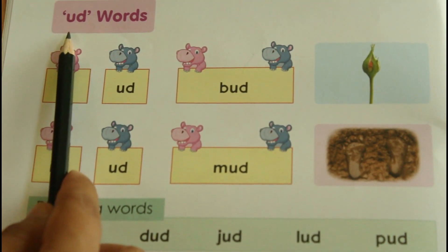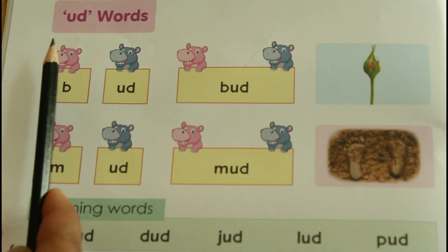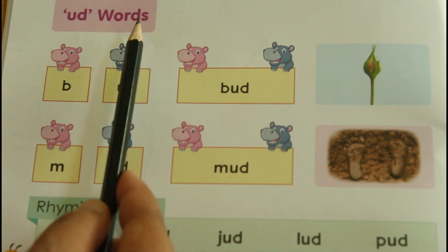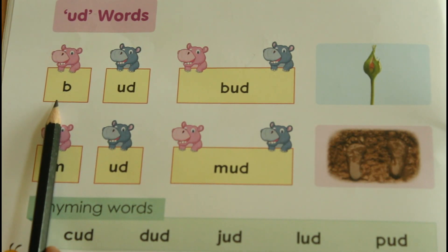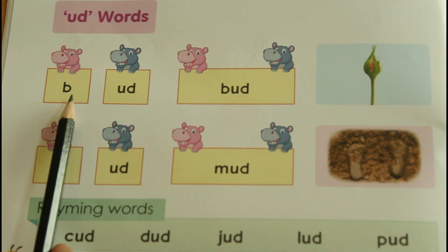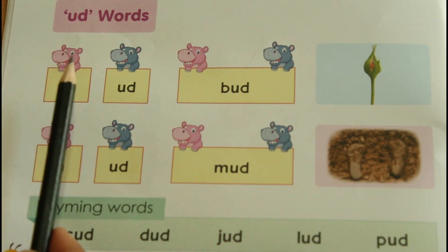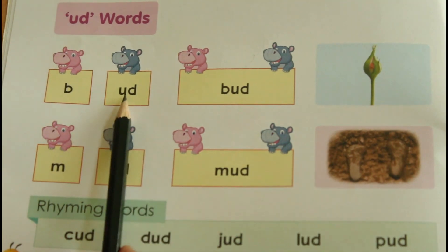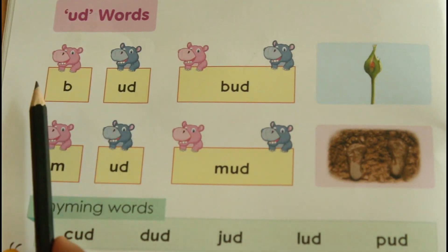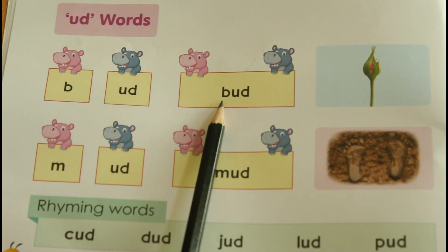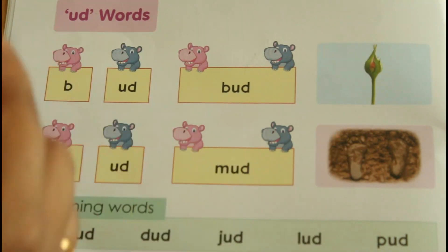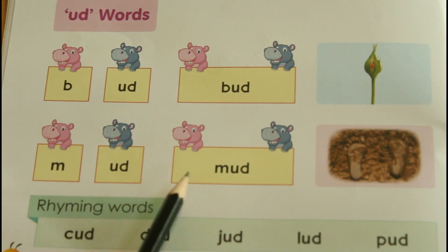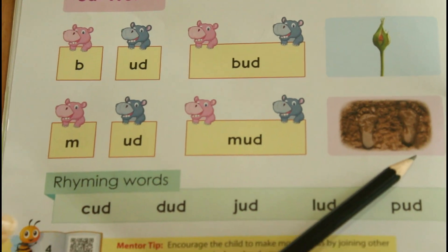This is the UT family. Please listen carefully — UT words. What is the first letter? B-ut: but. M-ut: mut. Now let's see a few rhyming words.